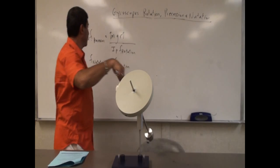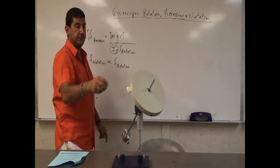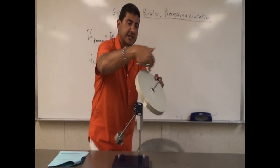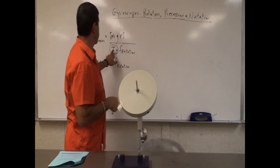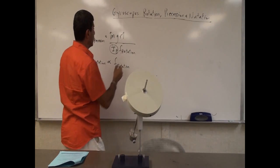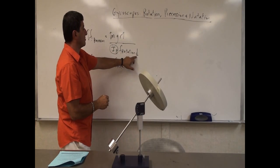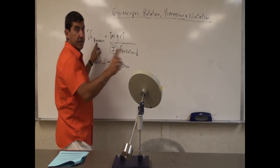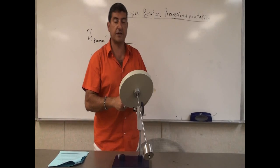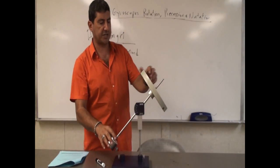It's going to precess faster. And then I divide that by the moment of inertia of the object, which depends on its mass and its radius. That's the moment of inertia, and this is the rotational frequency. So if I give it a very slow spin — if the rotational frequency is small — that will tend to make the precession faster. Let's see if the behavior of this is correct based on the equation.